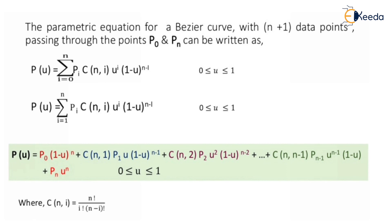Where C(n, i) is equal to n factorial divided by i factorial times (n minus i) factorial. So remember, it's a combination. We have to use this formula for solving the problem. This is the Bezier curve formula, where n plus 1 are the data points and n is the degree of the curve.